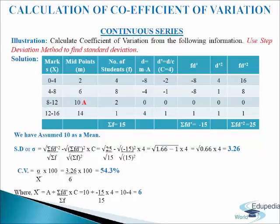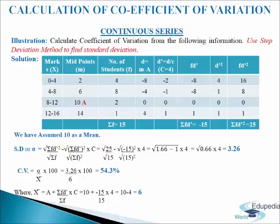In the next column we write FD dash, multiplying frequency by D dash: 4 times minus 2 gives minus 8; 8 times minus 1 gives minus 8; 2 times 0 gives 0; 1 times 1 gives 1. We add up to get sigma FD dash equals minus 15. In the next column D dash squared: minus 2 squared is 4; minus 1 squared is 1; 0 squared is 0; 1 squared is 1. In the last column FD dash squared: 4 times 4 is 16; 8 times 1 is 8; 2 times 0 is 0; 1 times 1 is 1. We add up to get sigma FD dash squared equals 25.